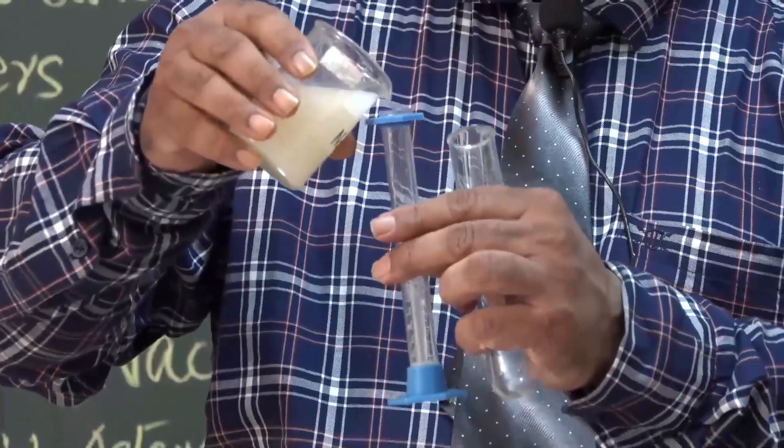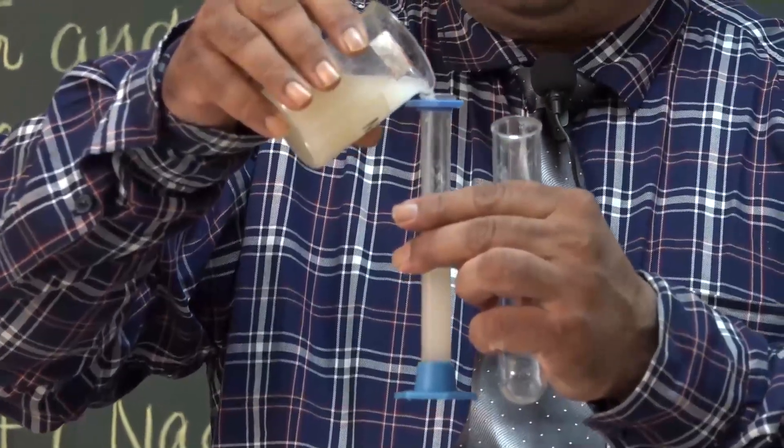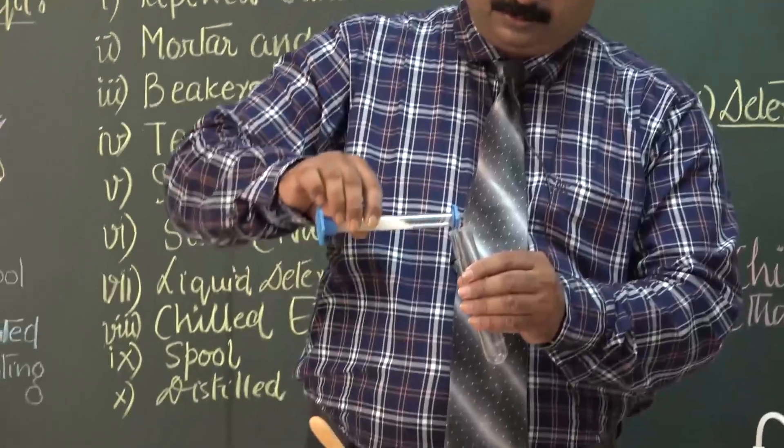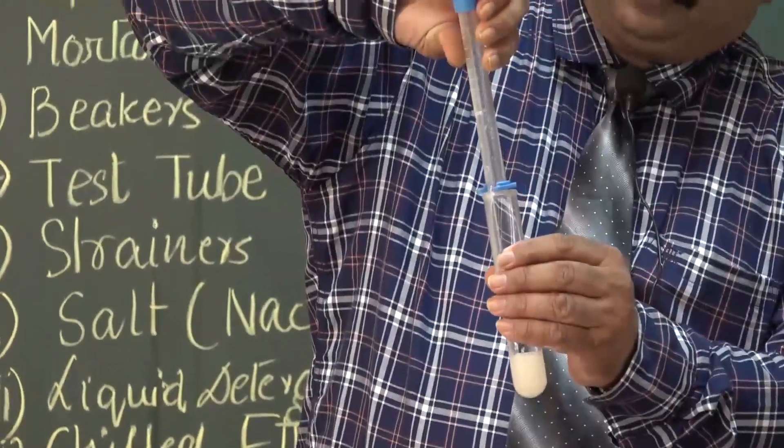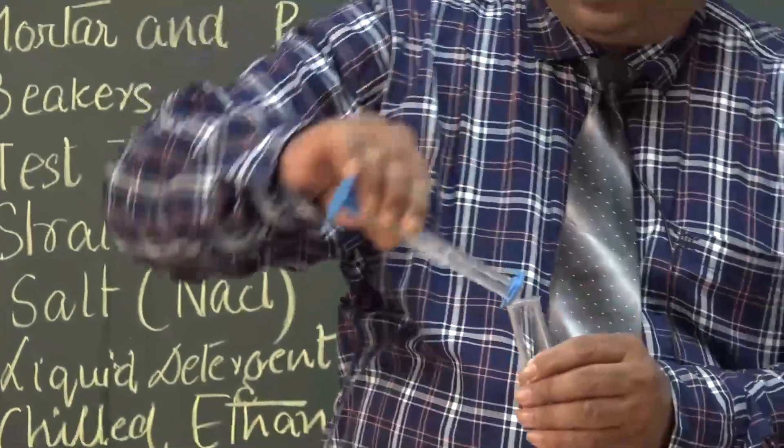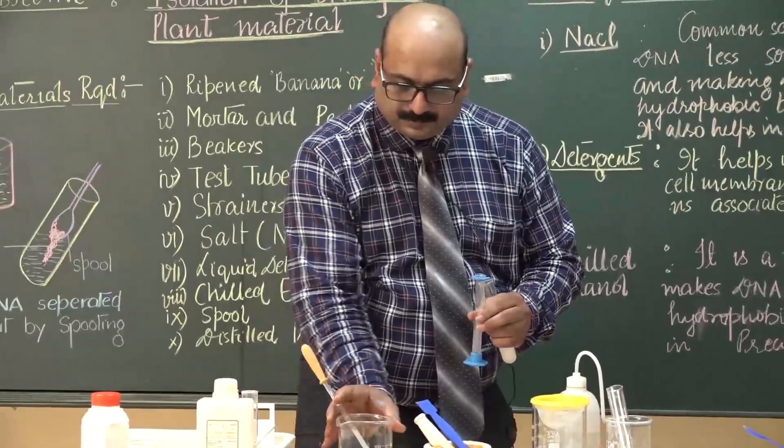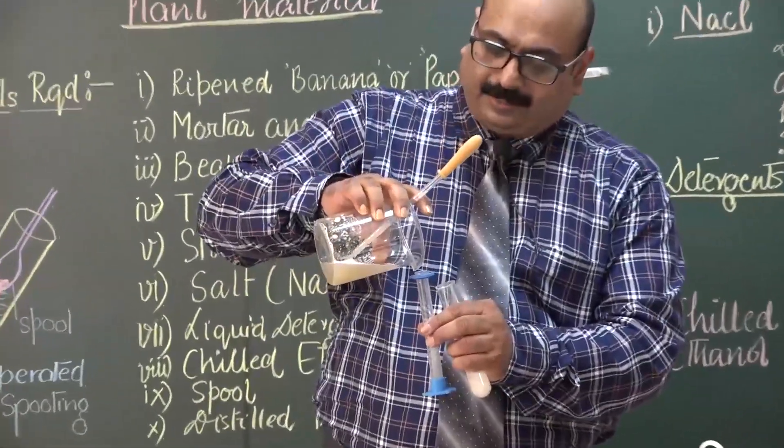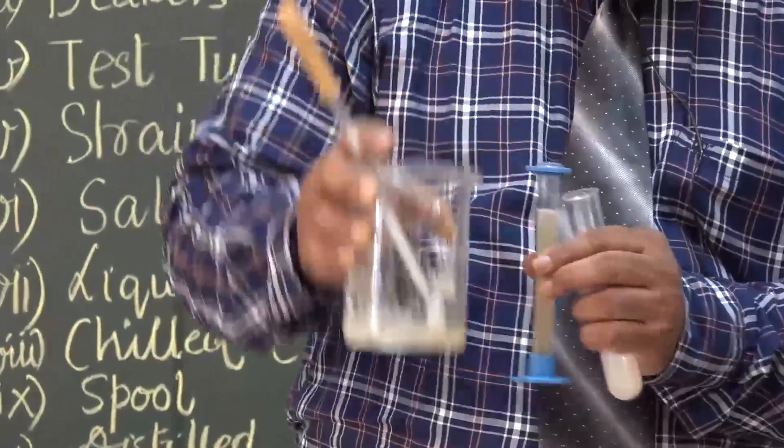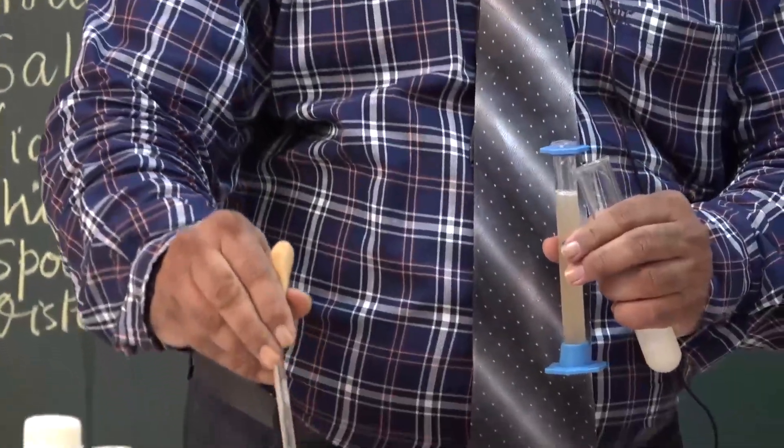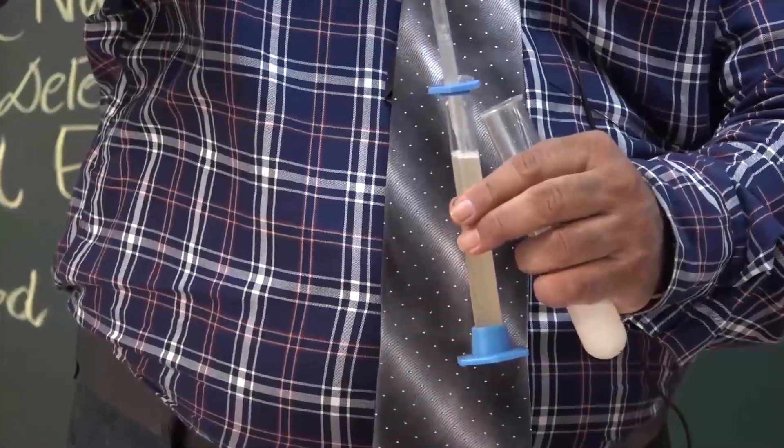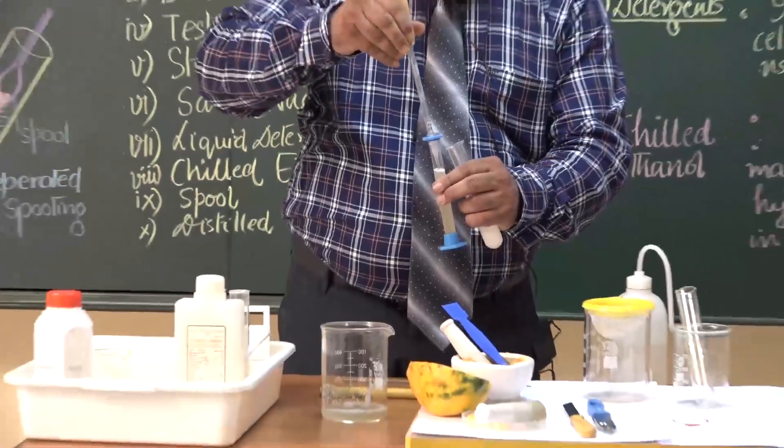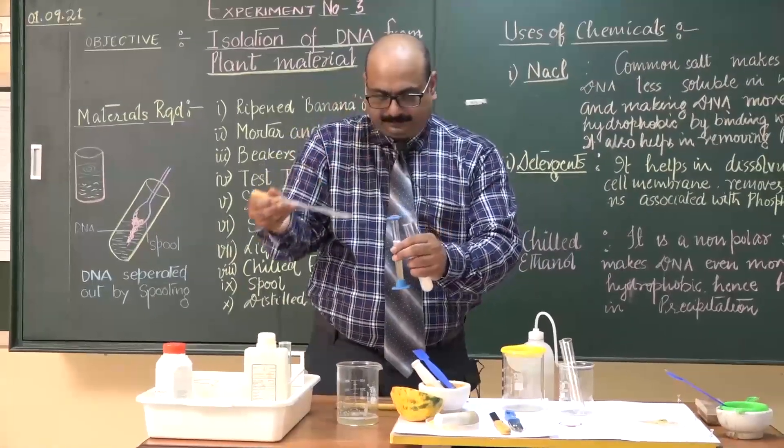You have to take precaution that it must be measured. This is 10 ml of NaCl and liquid detergent solution. Now, this 10 ml of banana cell suspension extract. Yes, it is exactly 10 ml.